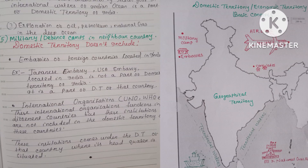Domestic territory does not include embassies of foreign countries located in India. For example, the Japanese embassy located in India is part of the domestic territory of Japan, and the US embassy located in India is part of the domestic territory of the USA. Additionally, international organizations like the UNO and WHO function in different countries, but these institutions are not included in the domestic territory of those countries. They come under the domestic territory of the country where their headquarters is situated.